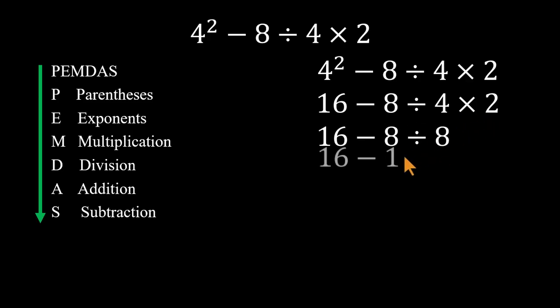Next, they divide. 8 divided by 8 equals 1. Finally, subtraction. 16 minus 1 equals 15. Sounds neat, right? Well, it's actually wrong.